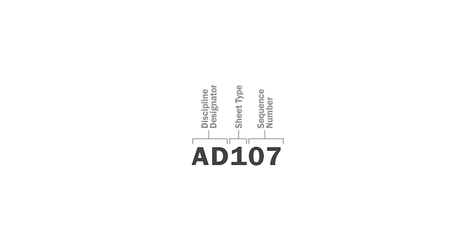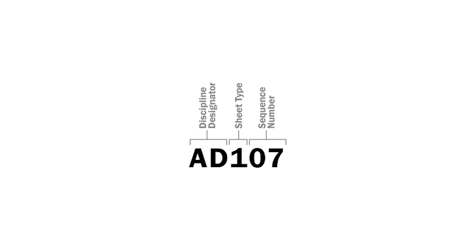For example, you'll want all of the floor plans together and all of the elevations together. You don't want the sequence to show a floor plan, then an elevation, then another floor plan, and then a section, and then another floor plan. It doesn't really make sense.